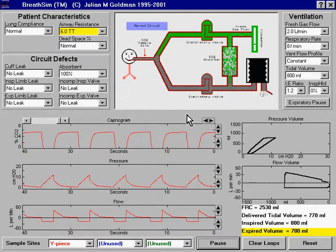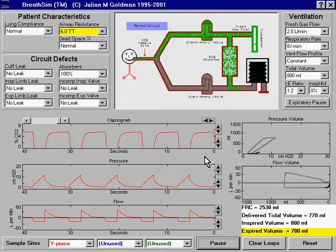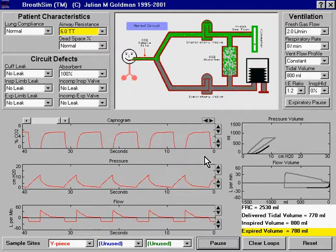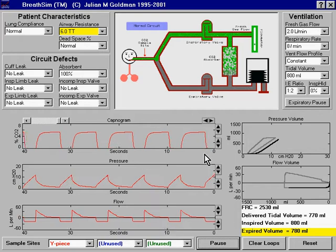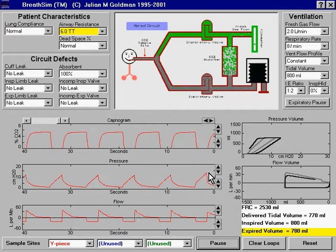The capnogram won't show much of a change because of the rather small change in airway resistance. However, we can see on the airway pressure tracing that there is a small increase in peak airway pressure.